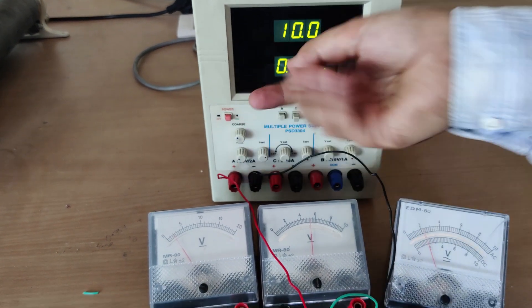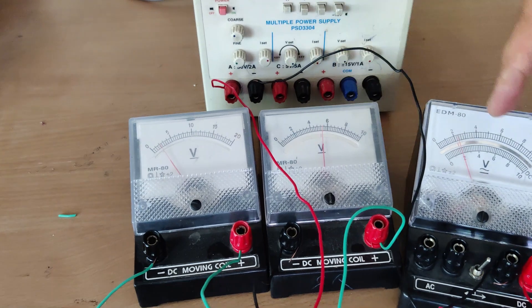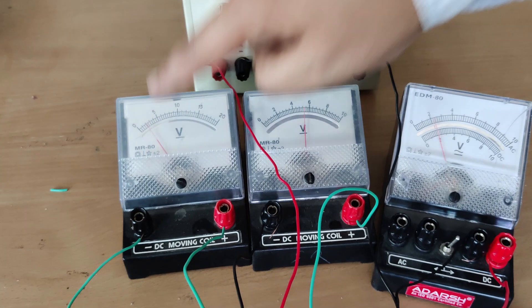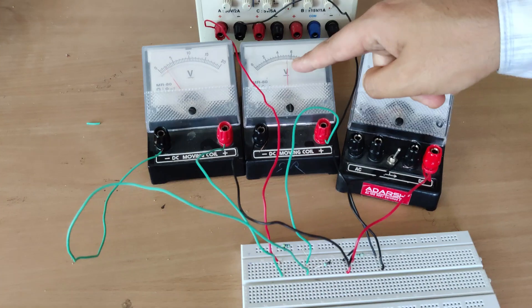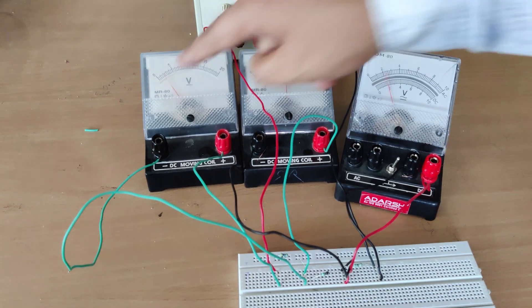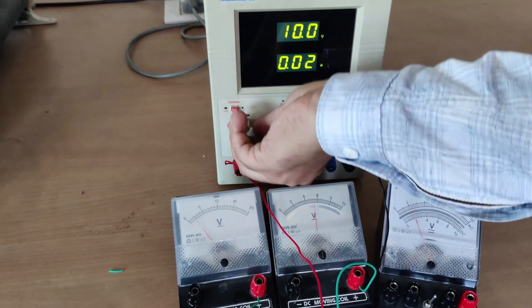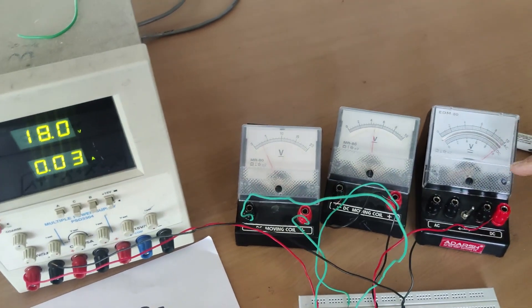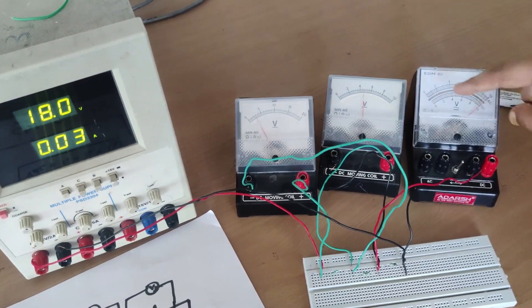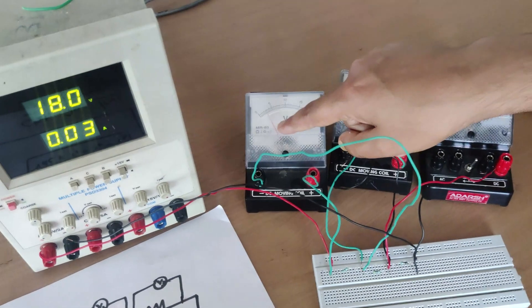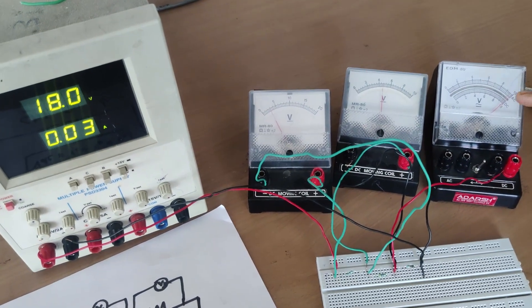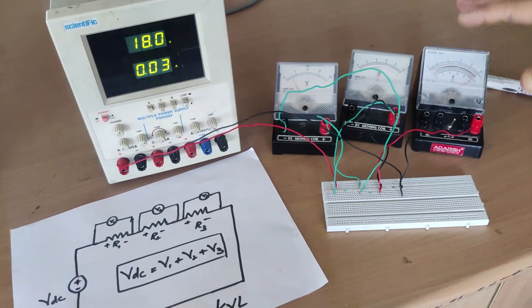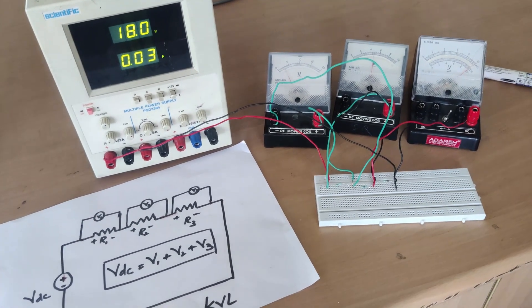I am supplying 10 volts. You can see the drop across R1 is almost 2 volts, across R2 is almost 5 volts, and across R3 is almost 3 volts. So the total is 2 + 5 + 3 = 10 volts, which confirms Kirchhoff's voltage law. I will now increase the voltage to 18 volts. The drop across R1 is almost 10 volts, across R2 is almost 5 volts, and across R3 is almost 3 volts — so 10 + 5 + 3 = 18 volts. This confirms that the supply voltage equals the sum of the voltage drops across each resistor.